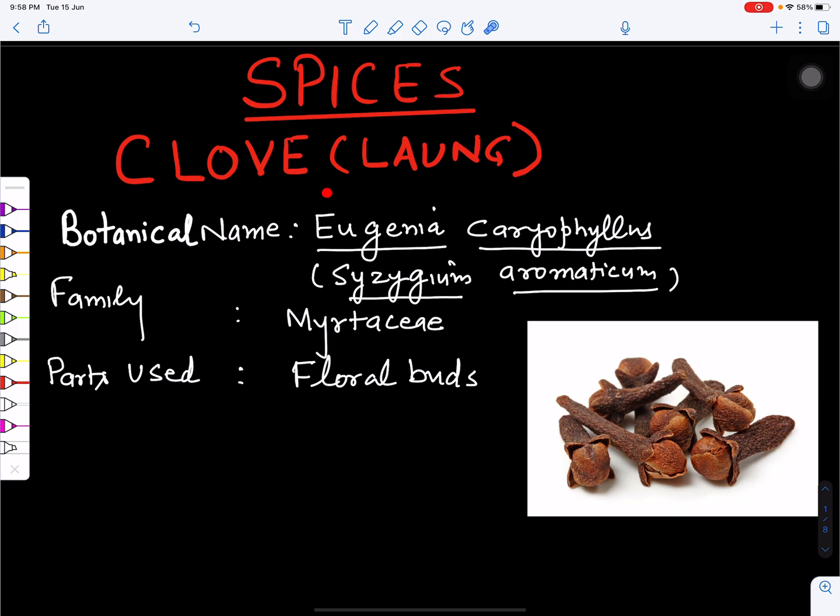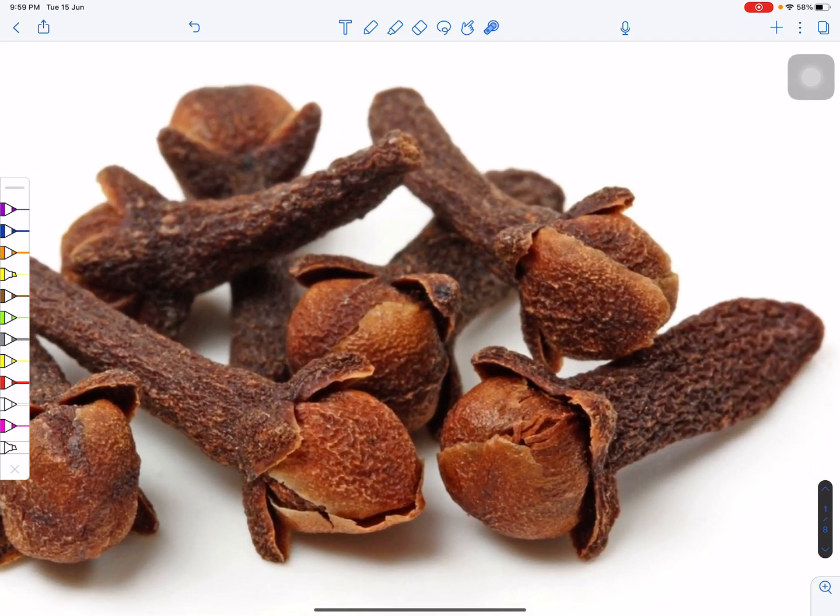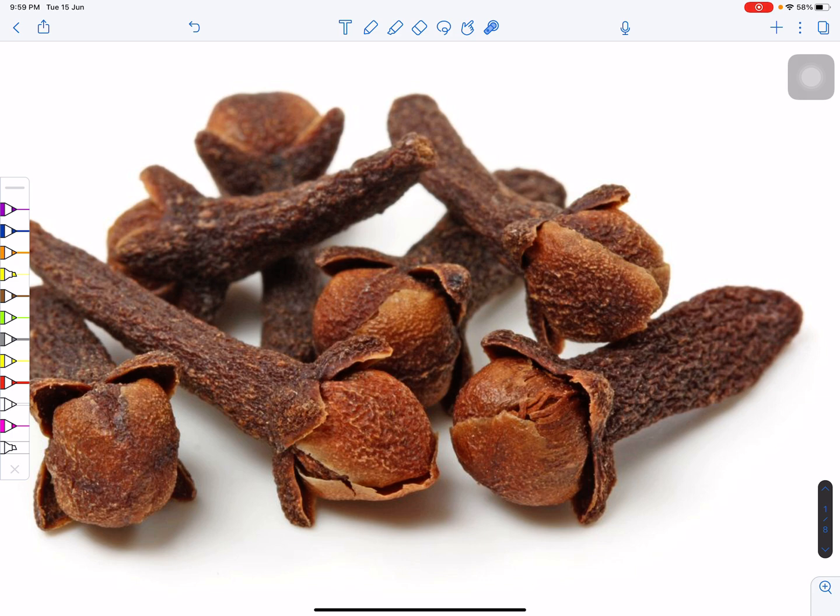Botanical name of clove is Eugenia cariophilus or Syzygium aromaticum. This belongs to family Myrtaceae. The part which we use as a spice are its floral buds. We can see these are its floral buds and they have not opened yet, so these are unopened floral buds.